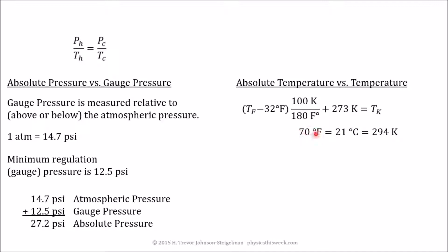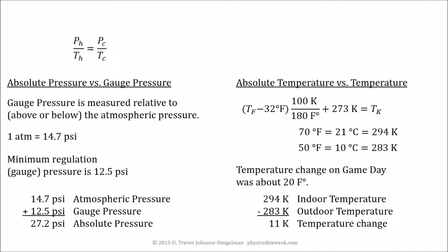If you run 70 degrees through this formula, you change it to 21 degrees Celsius, add your 273, you get 294 degrees Kelvin. And if you look at 50 degrees Fahrenheit, which those two temperatures might sound familiar from recent events, that's about 10 degrees Celsius or 283 degrees Kelvin. The temperature change on game day was about 20 degrees. That's why I picked these two particular numbers. If you subtract these in Kelvin, you get a temperature change of about 11 Kelvin degrees or 11 K.